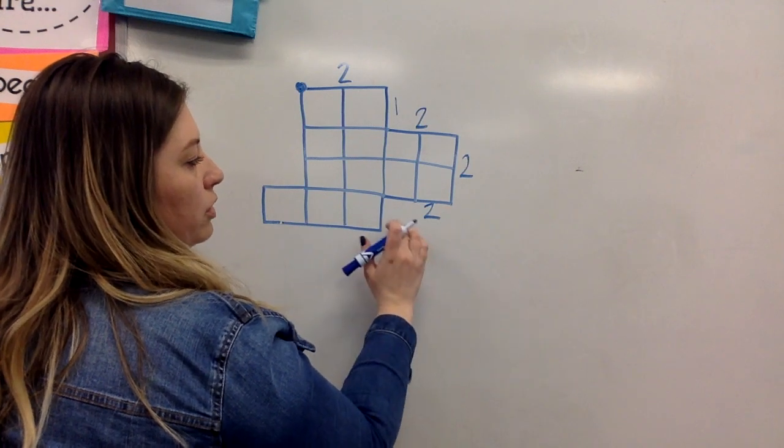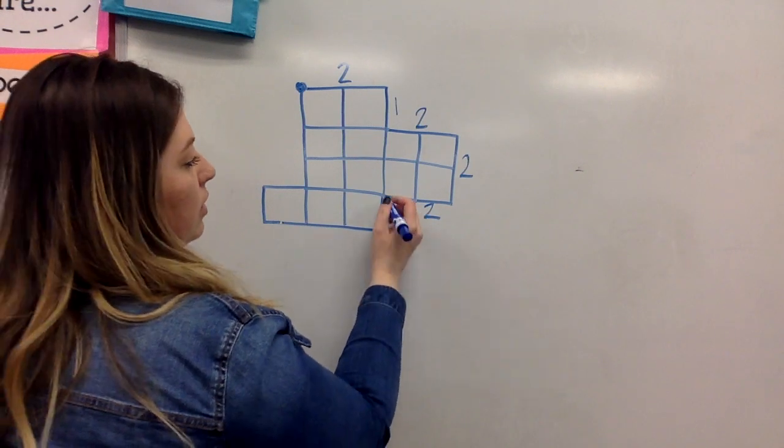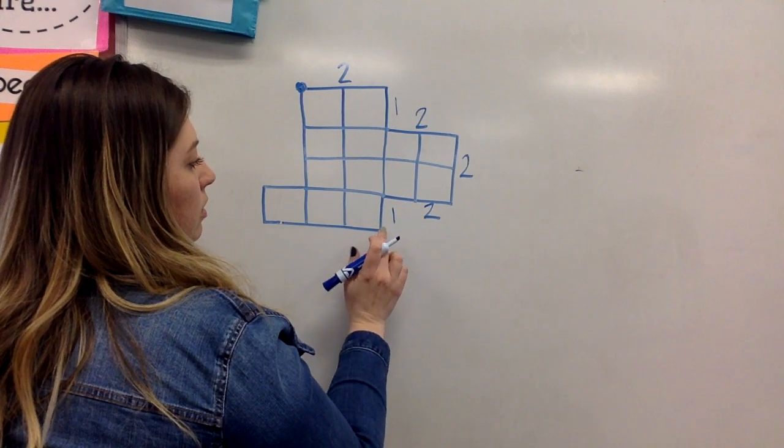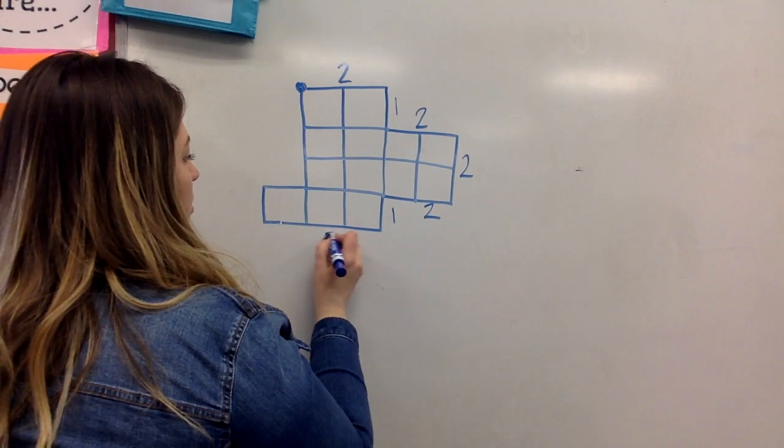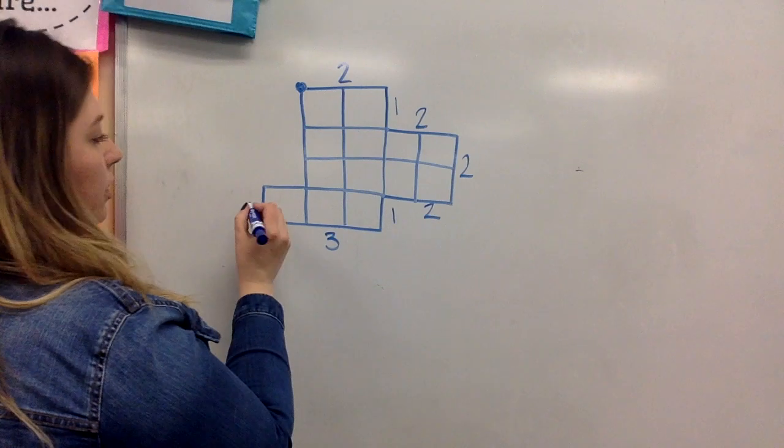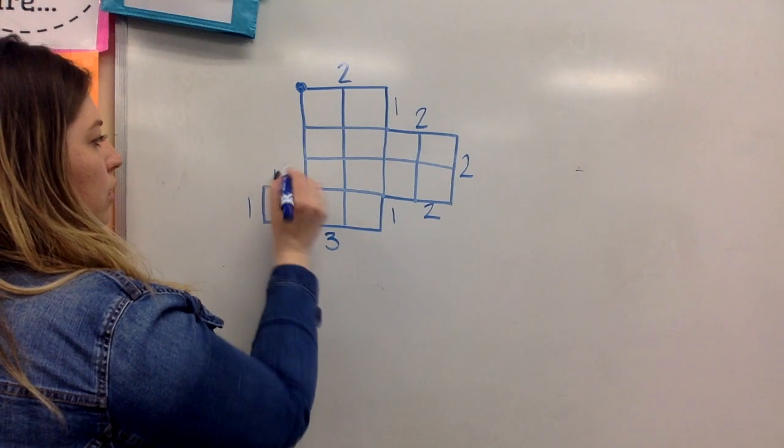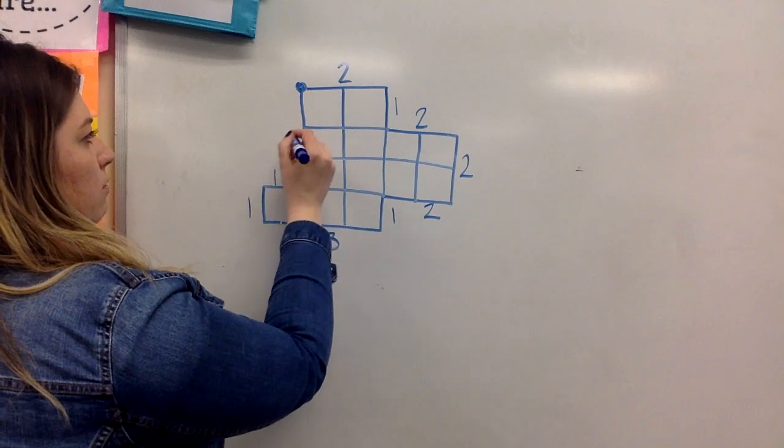So like for this one, I scooted it over, so I would have room right here for this one. This going down is just one, one, two, three. This one way over here is one. This one right here is just one, and then one, two, three to finish it off.